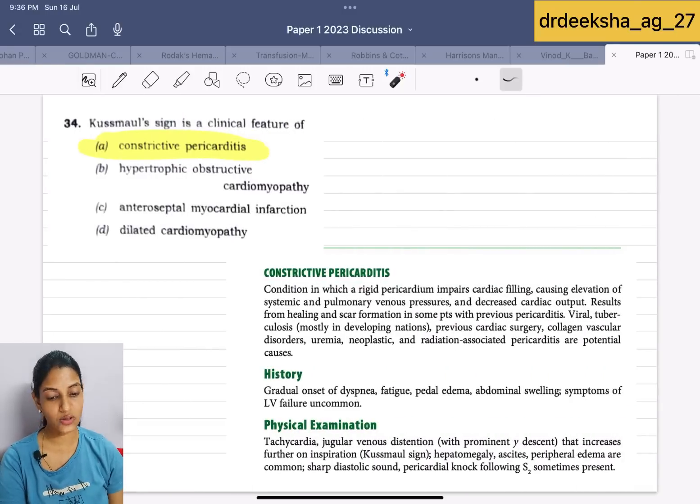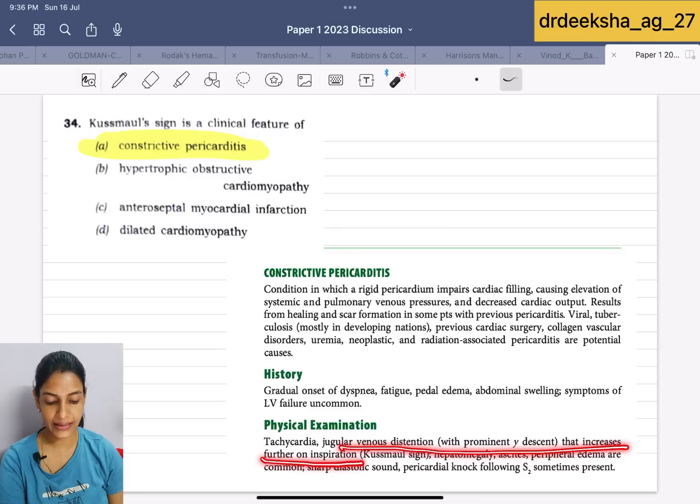Next question is, Kussmaul's sign is a clinical feature of? Kussmaul's sign means jugular venous distension that increases further on inspiration, seen in the case of constrictive pericarditis.